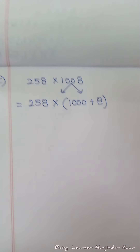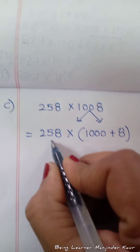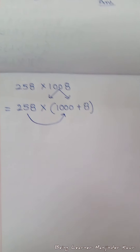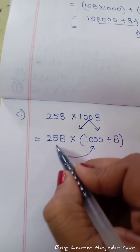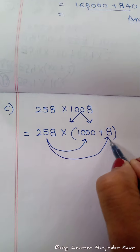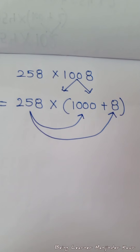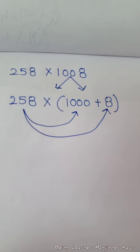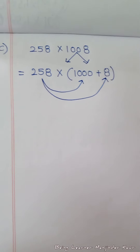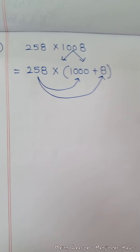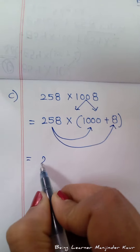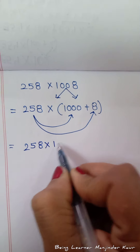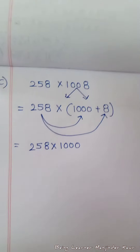अब यह मेरी understanding है कि 258 अंदर 1000 के साथ multiply हो रहा है और 8 के साथ भी multiply हो रहा है। आप ऐसे arrows लगा सकते हो — arrows लगाने में कोई problem नहीं है, इस पर आप लोगों का step गलत नहीं होगा। Then आप लोगों ने 258 को 1000 के साथ multiply कर देना है।